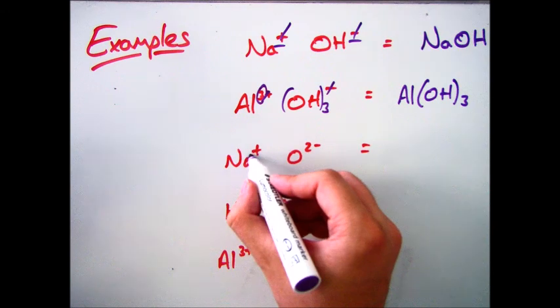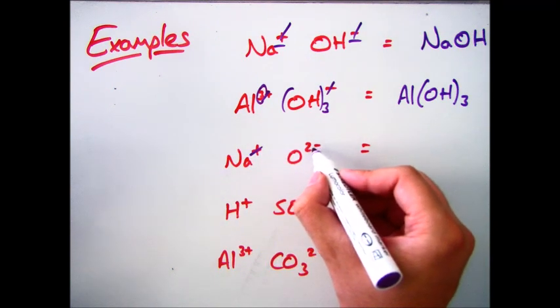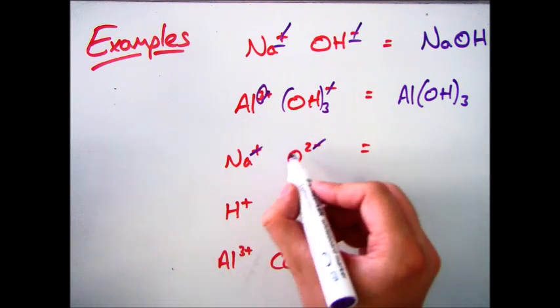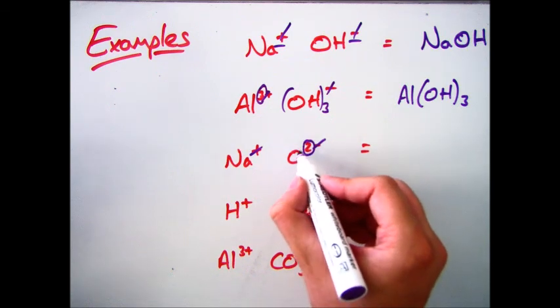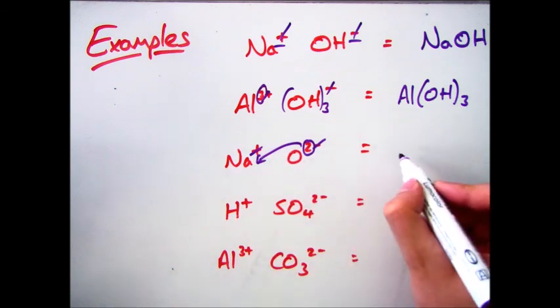Na+ and O2-, same again, get rid of the charge, take that number 2 and move it down below. So that gives me the formula of Na2O.